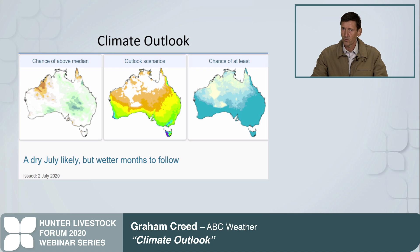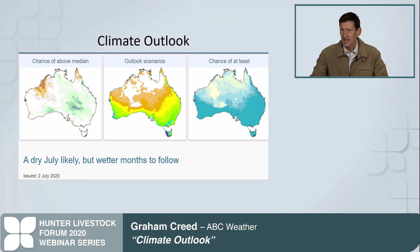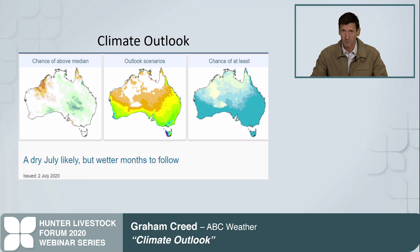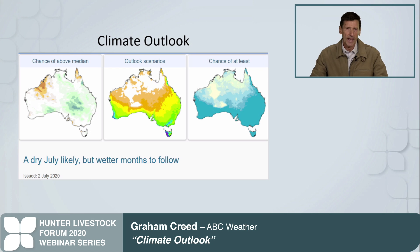The first difference between a rain forecast and a climate outlook is that they use totally different models and totally different ways to look at what the climate is doing. You can't say that if forecasts aren't right, how can outlooks be correct — we're talking totally different systems. It's also important to clarify that this is an outlook, not a forecast. No one can forecast rainfall that far out; it provides an outlook on the expected climate conditions that will produce a potential of rainfall.